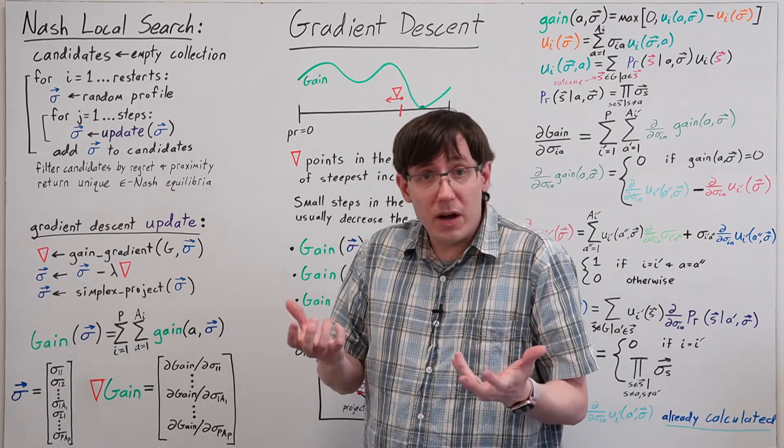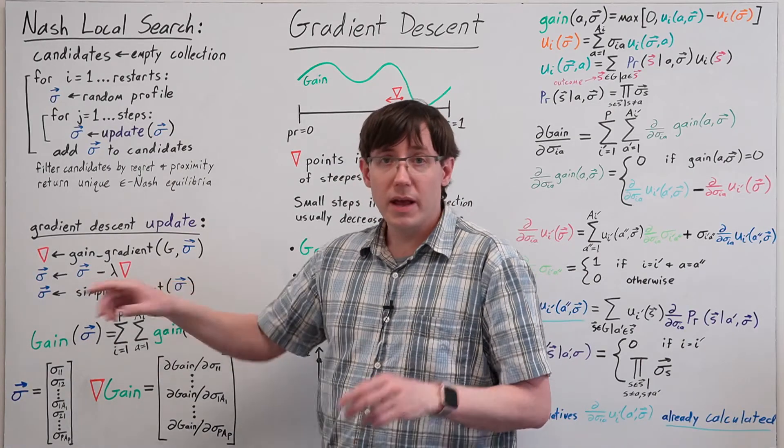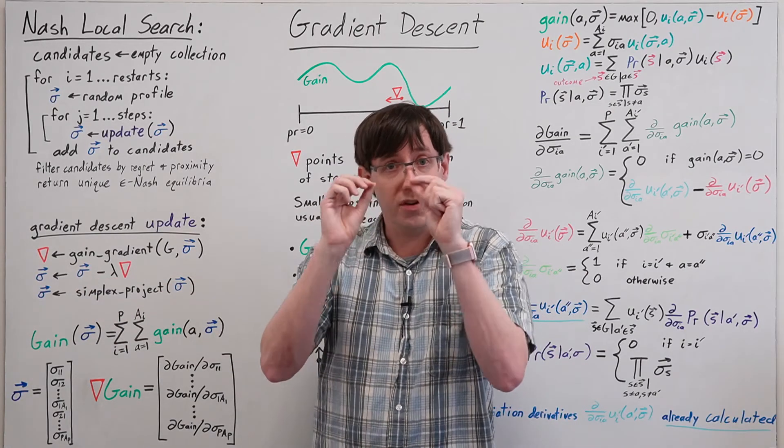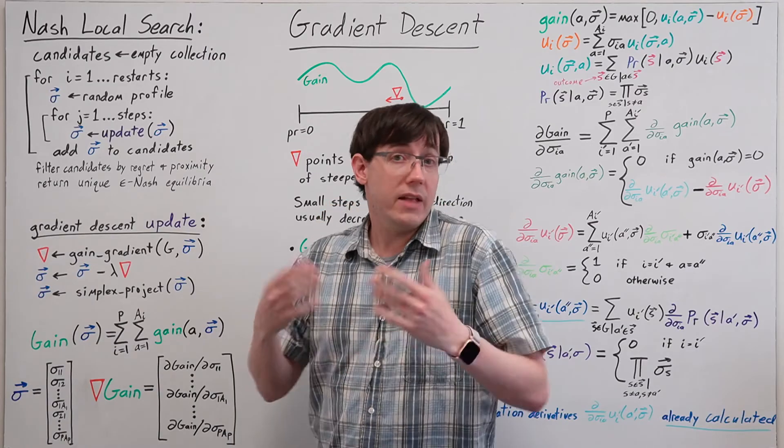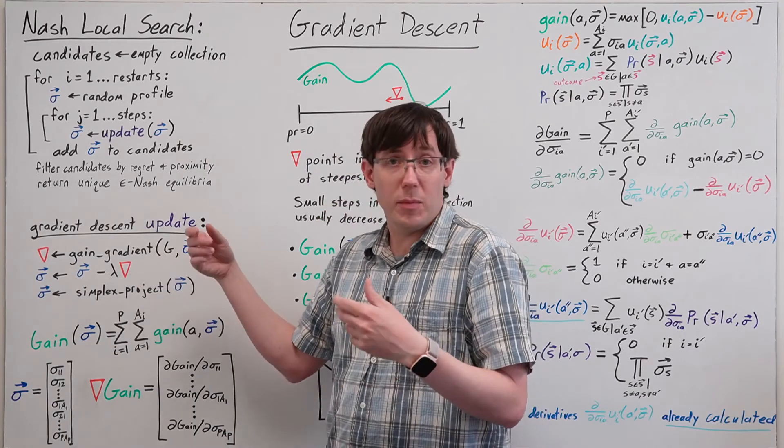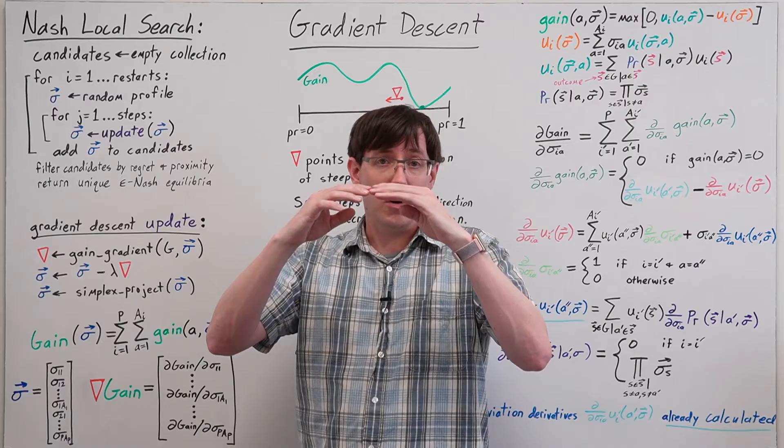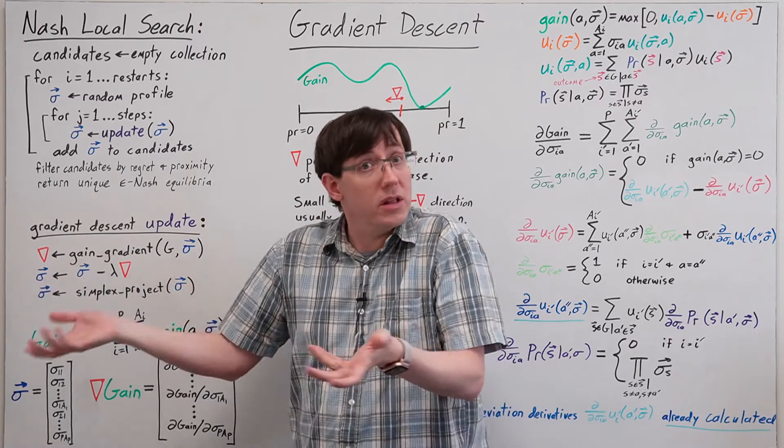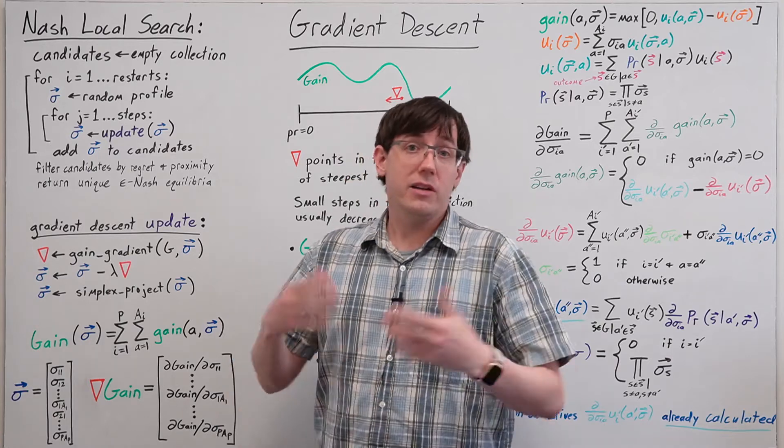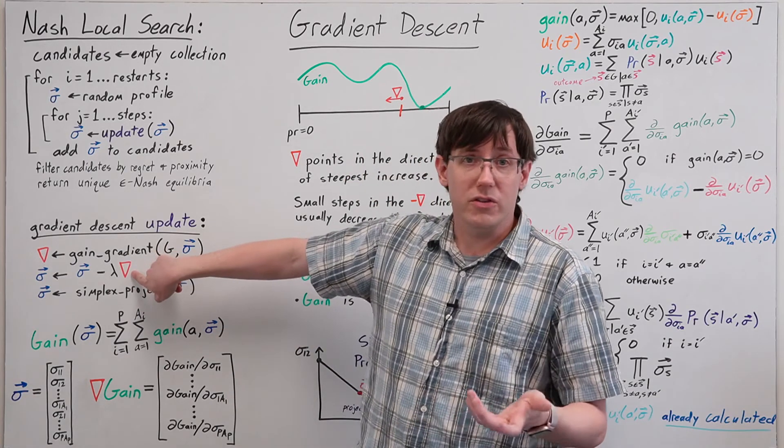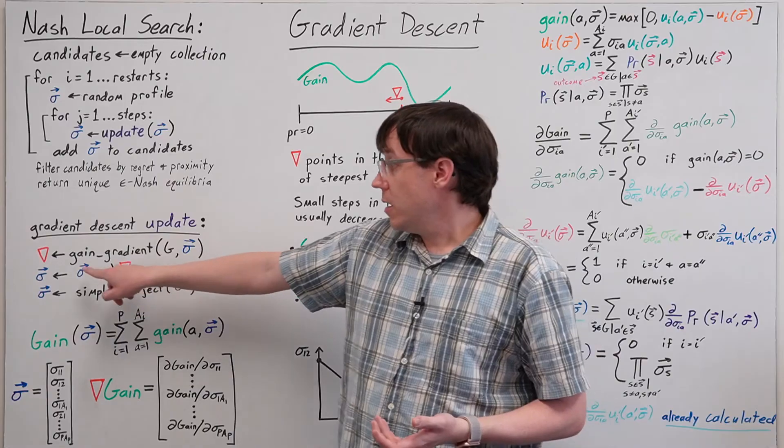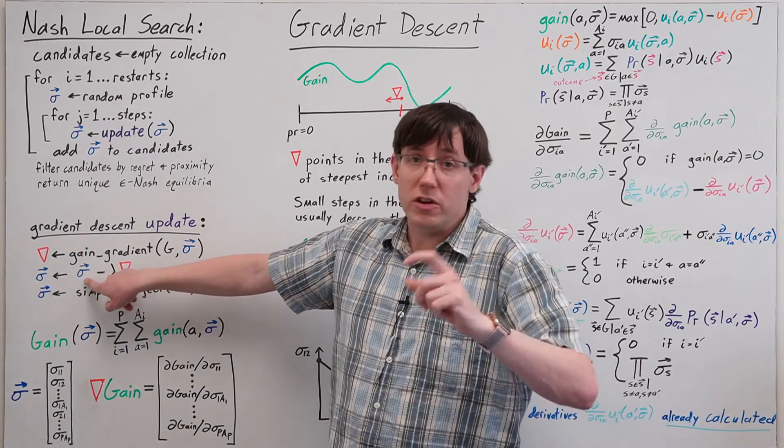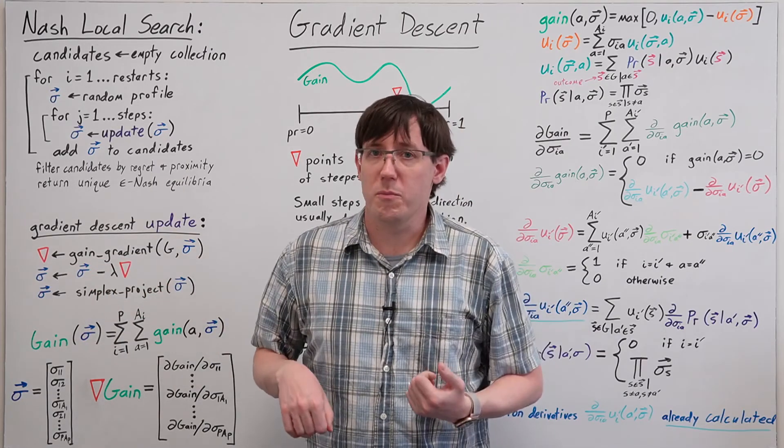It's entirely possible that our profile from the previous step had some very small or zero probabilities, and then the partial derivative in that dimension was positive, so when we subtract the gradient, we'll get a negative probability in that dimension. It's extremely likely that when we subtract this other vector, the individual mixed strategies for each player will no longer sum to one.